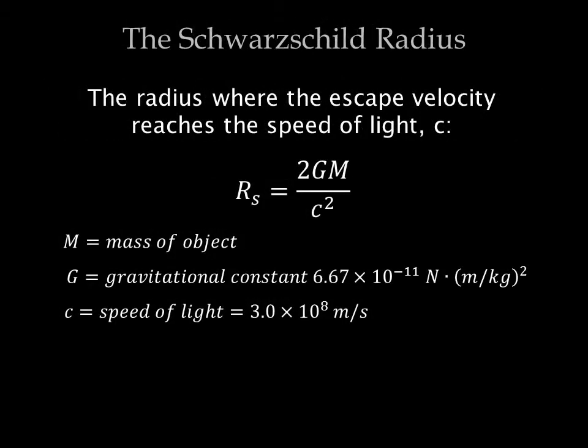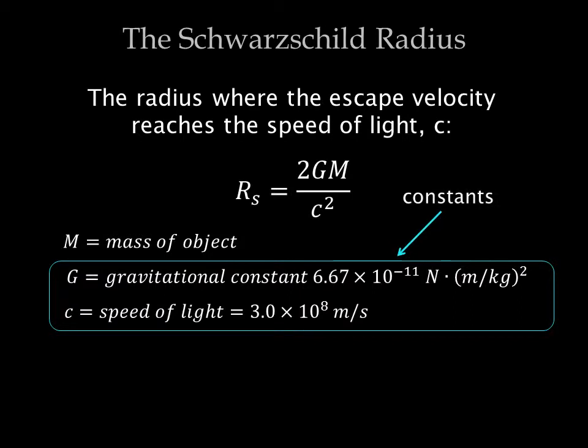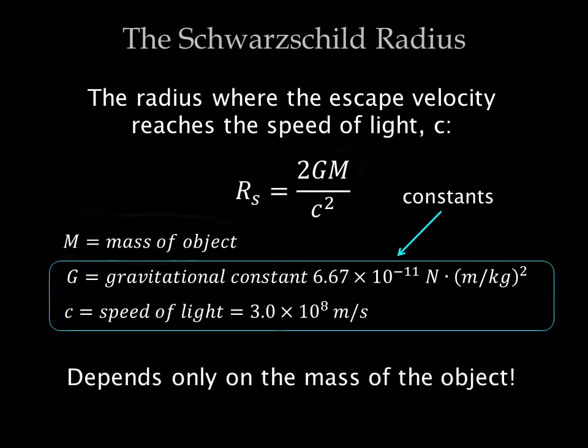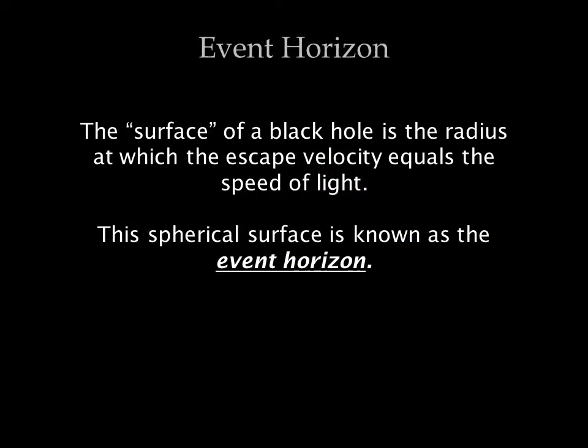To talk about the size of a black hole, we need to introduce the Schwarzschild radius. This is the radius at which the escape velocity reaches the speed of light. In equation form, it is equal to 2 times the gravitational constant G times the mass of the object divided by the speed of light squared. G and C are both constants, so the Schwarzschild radius depends only on the mass of the object. The boundary between the inside of a black hole and the universe outside is called the event horizon — it's the boundary around the black hole at which the escape velocity equals the speed of light. Nothing that passes within this boundary can ever escape.